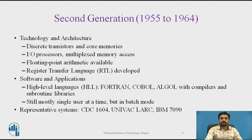In the second generation, from 1955 to 1964, transistors were invented by Bardeen, Brattain, and Shockley in 1947 at Bell Labs, and by the 1950s these transistors made an electronic revolution. Transistors are smaller, cheaper, and dissipate less heat compared to vacuum tubes. Transistors were used instead of vacuum tubes to construct computers. Another major invention was magnetic cores for storage, used to build large random-access memories. These computers had better processing speed, larger memory capacity, and smaller size.